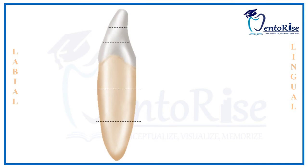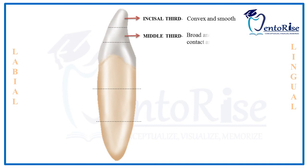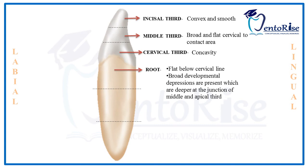Regarding the surface of the tooth as observed from the mesial aspect: the incisal third is convex and smooth till the crest of curvature or contact point. After this, in the middle third of the crown, the surface is broad and flat. This broadness and flatness turns into concavity in the cervical third of the crown. The root surface is flat below the cervical line, and a broad developmental depression is present on the entire root surface, with greater depth at the junction of the middle and apical thirds.